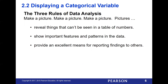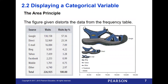One of the key rules we want to watch out for here is what's called the area principle. That means that whatever portion of your responses a particular data point represents, we want to make sure that we are displaying it with an appropriate area within our visual display.